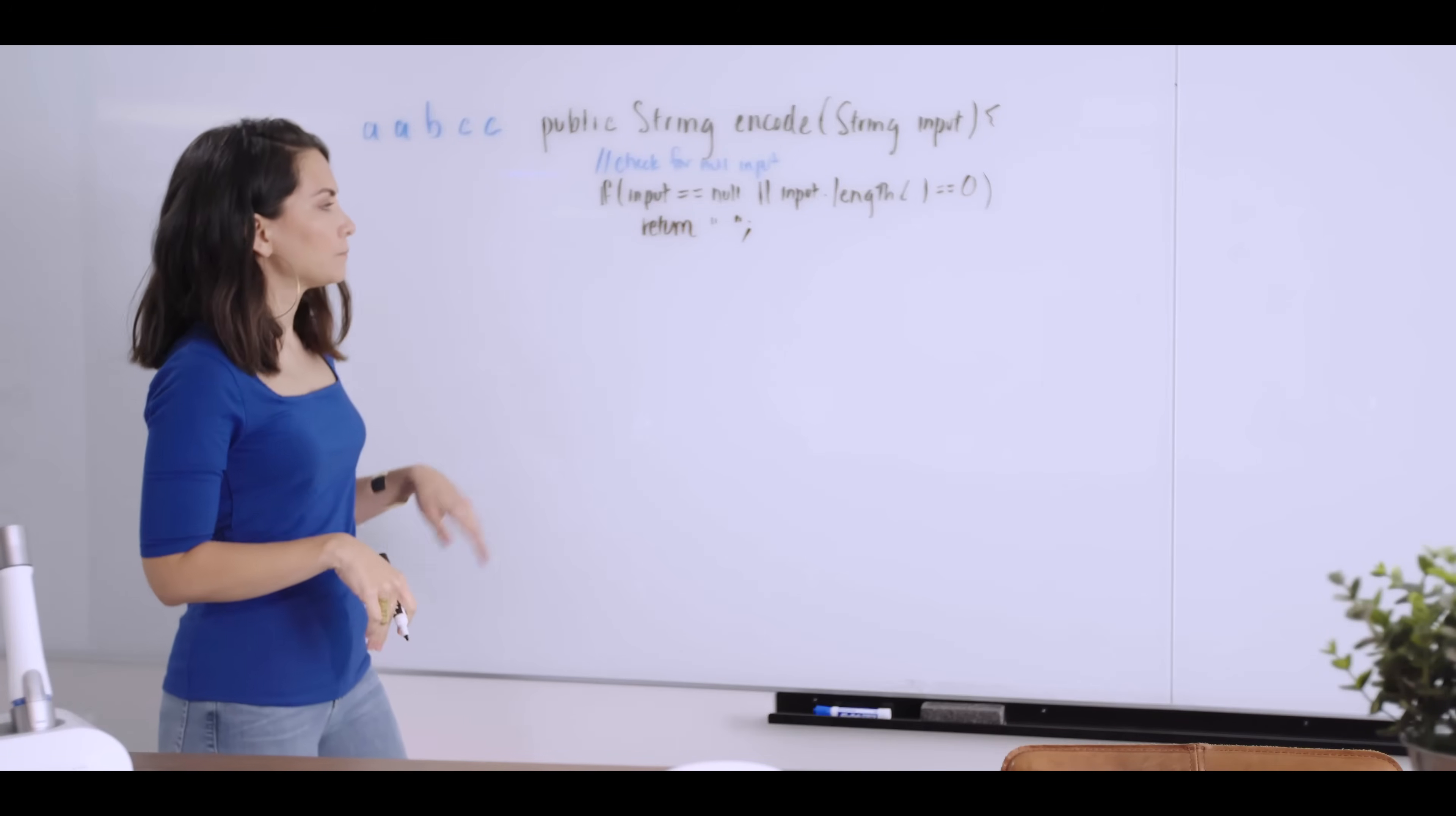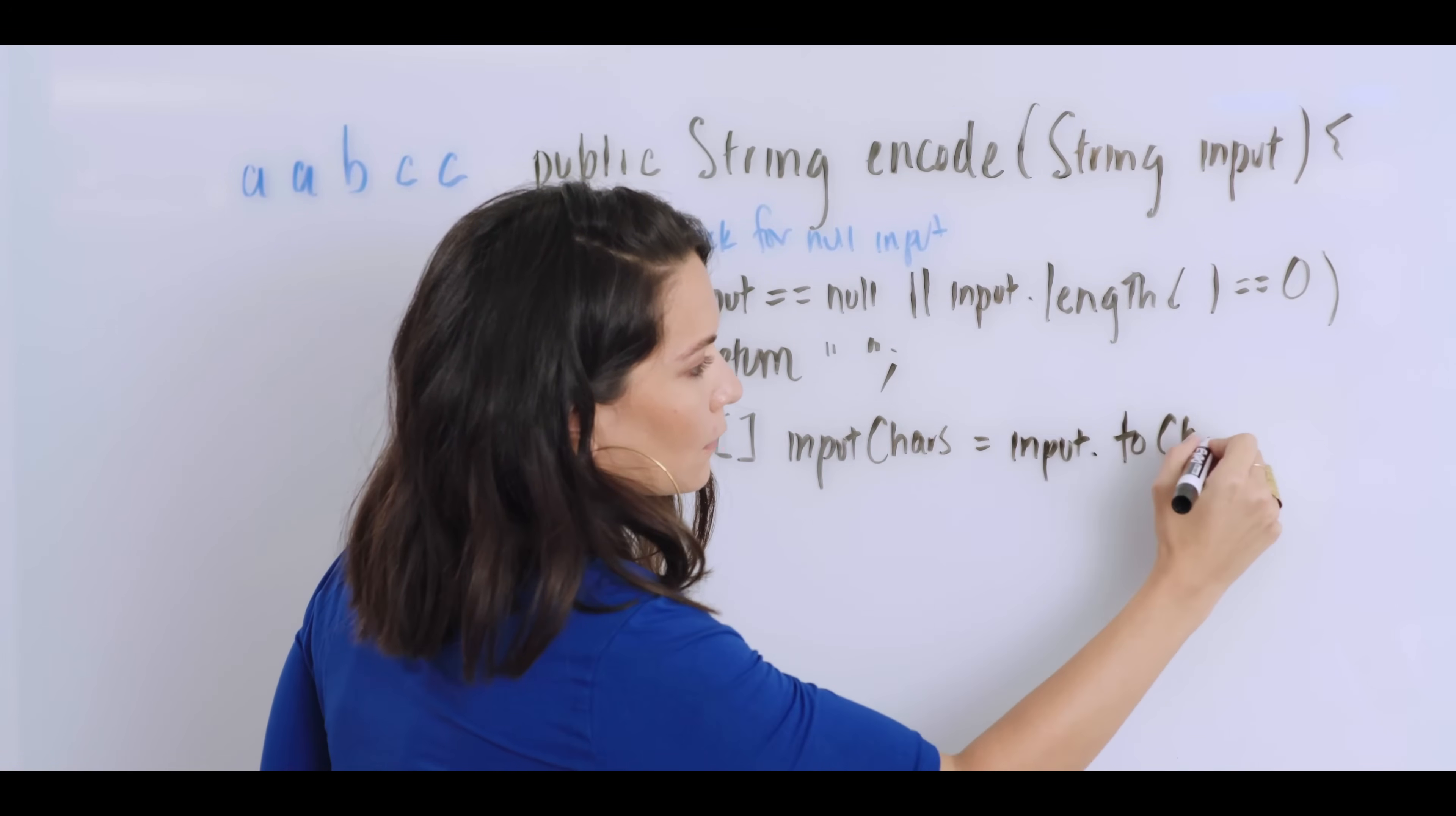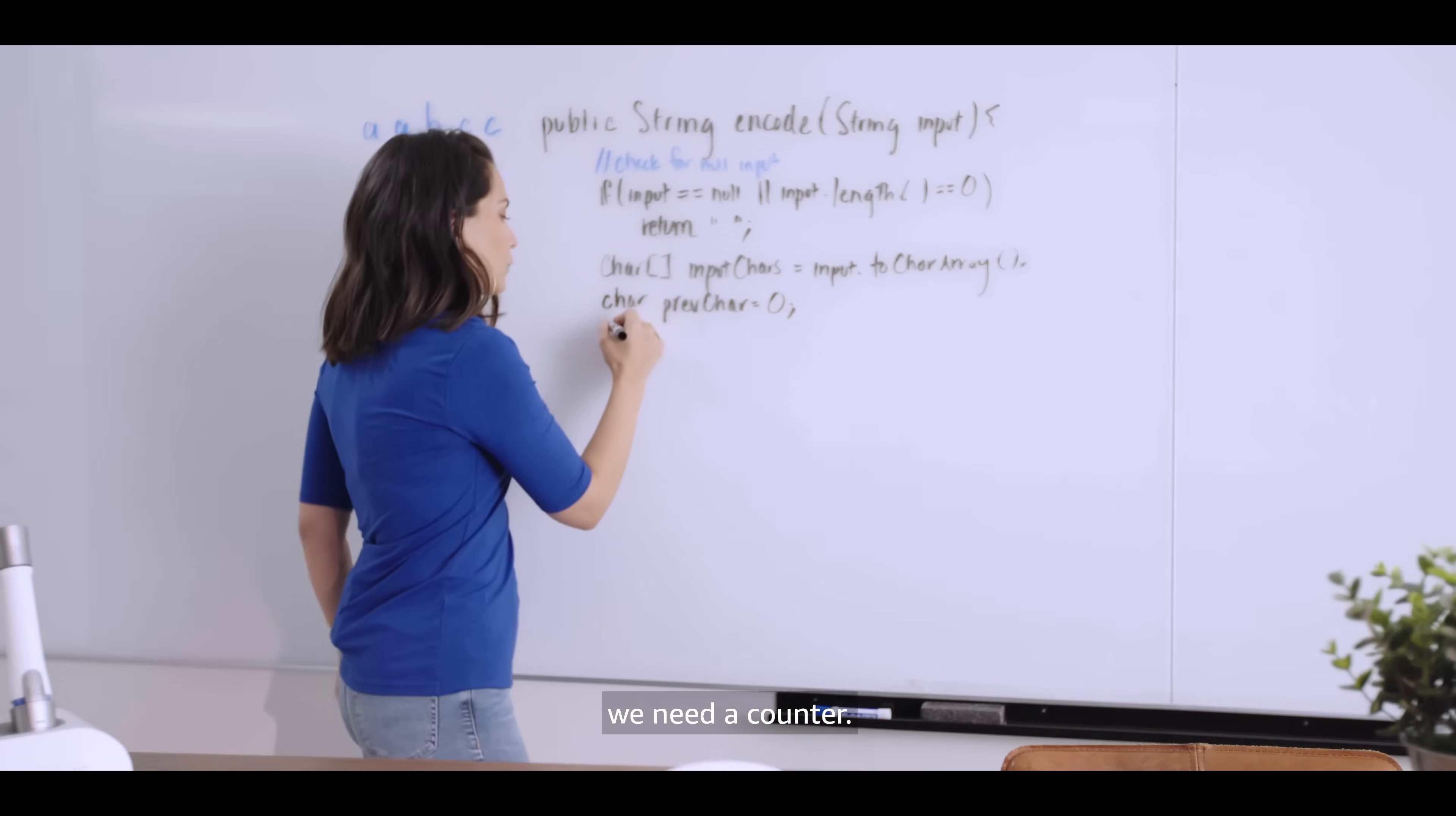So if it's null, we return the empty string. Now we need to start initializing the variables that we're going to solve the problem. Because we're going to be walking through an array of characters, we should probably convert this to a char array. And also, because we need to track whatever the previous character was, we should create a variable to store that. And because we're going to need to keep a count of how many we've observed in the run, we need a counter.